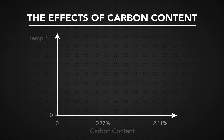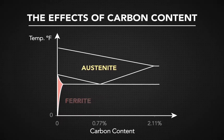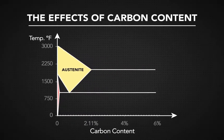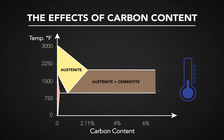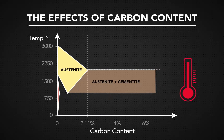Steel in the ferrite phase isn't able to hold as much carbon as in the austenite phase. At the start of manufacturing, steel is in the austenite region at higher temperatures. At an elevated temperature, solid steel that has less than 2.11% carbon is able to retain carbon, even in a dissolved state.